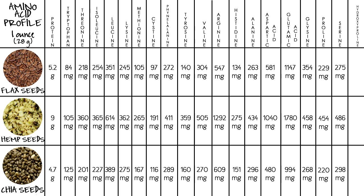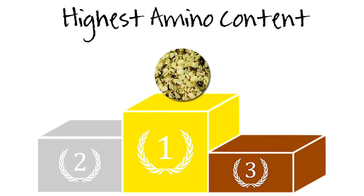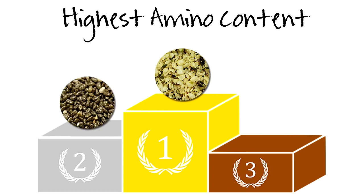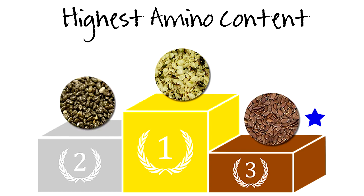For hydroxyproline: flax seeds 50 mg, hemp seeds 0, chia seeds 0. It's pretty easy to see hemp seeds crush the competition. However, I want to give an honorable mention to flax seeds for containing hydroxyproline — an amino acid typically found only in animal products, so finding it in a plant source is pretty rare. For our winner's platform, hemp seeds take a well-deserved first place, chia in second, and flax in third — with an honorable mention for the hydroxyproline content.